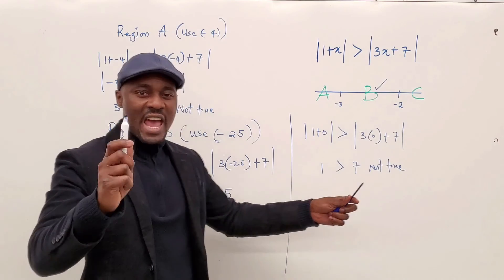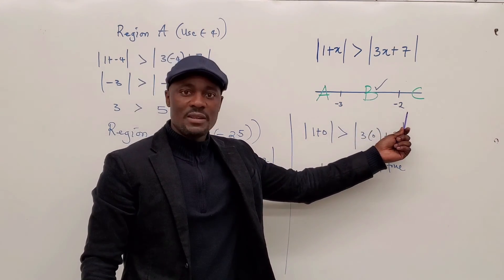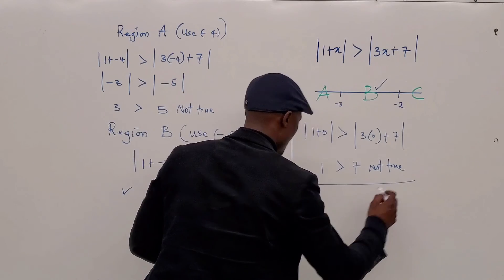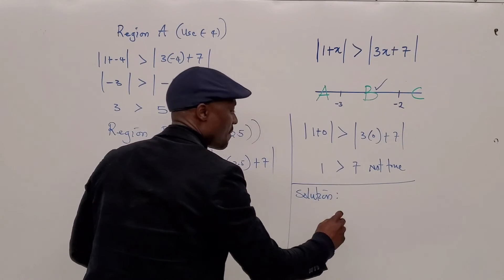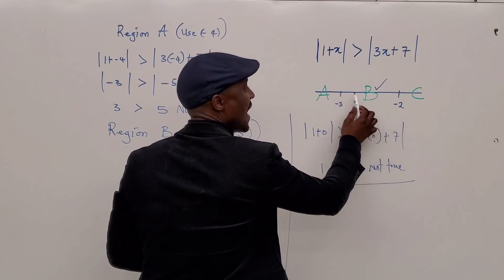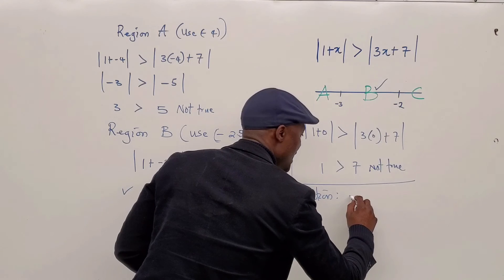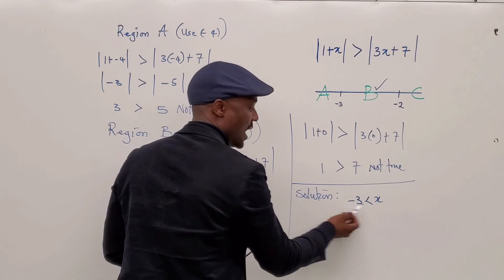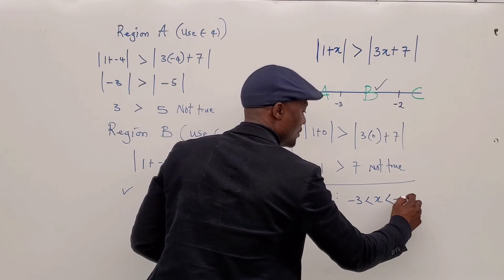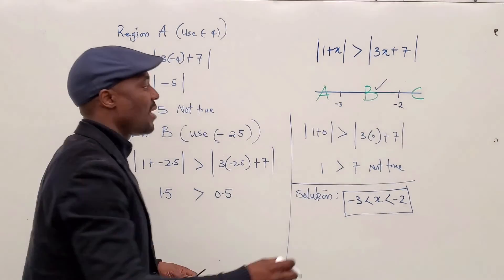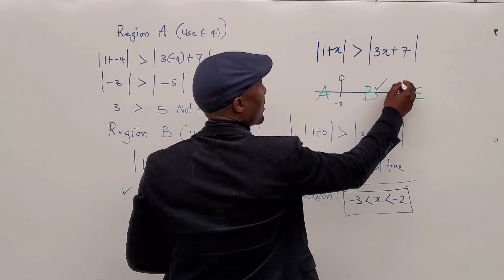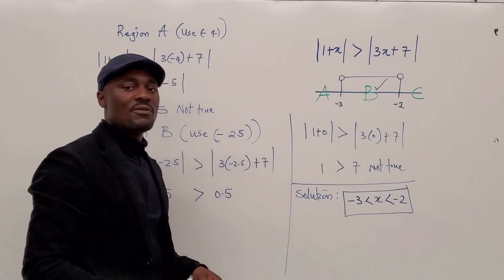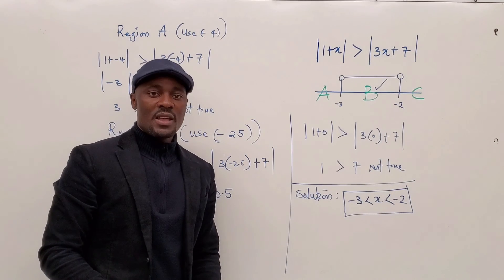Now we've found our answer. X is a number that is greater than negative 3 but less than negative 2 — it's between negative 3 and negative 2. So the solution is: negative 3 is less than x, and x is less than negative 2. Negative 3 is not one of the numbers, and all numbers must be strictly less than negative 2. If you plot it on a graph, the circles are empty (not shaded) because this is strictly greater than — there is no equality sign. This is the solution to this absolute value inequality.